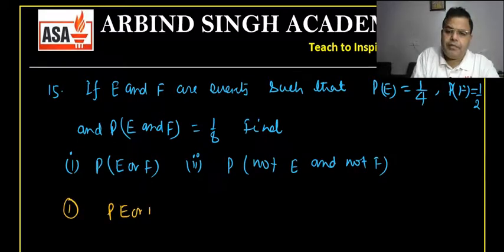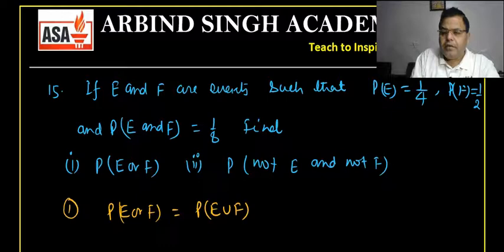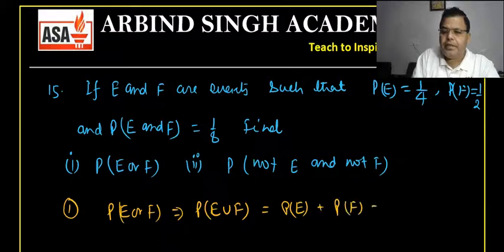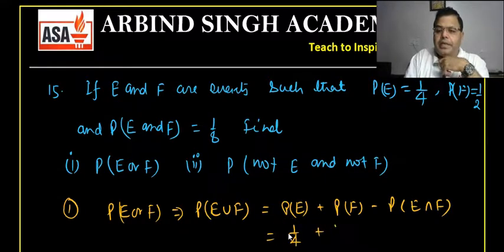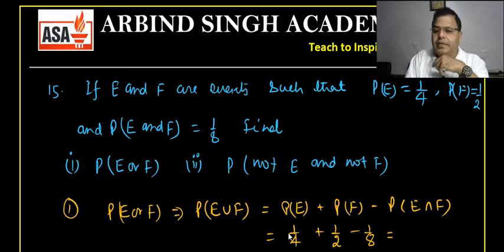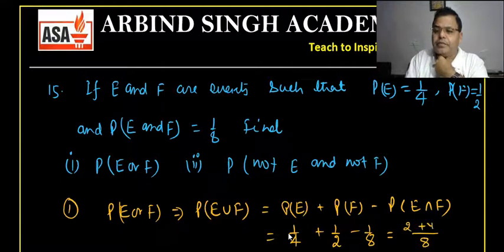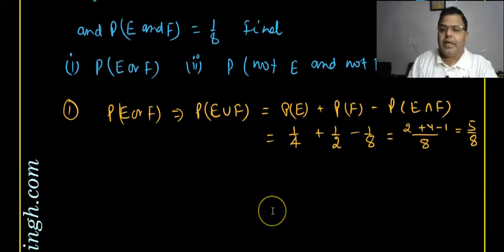P(E ∪ F) = P(E) + P(F) − P(E ∩ F) = 1/4 + 1/2 − 1/8. With LCM 8: (2 + 4 − 1)/8 = 5/8. So P(E or F) = 5/8.